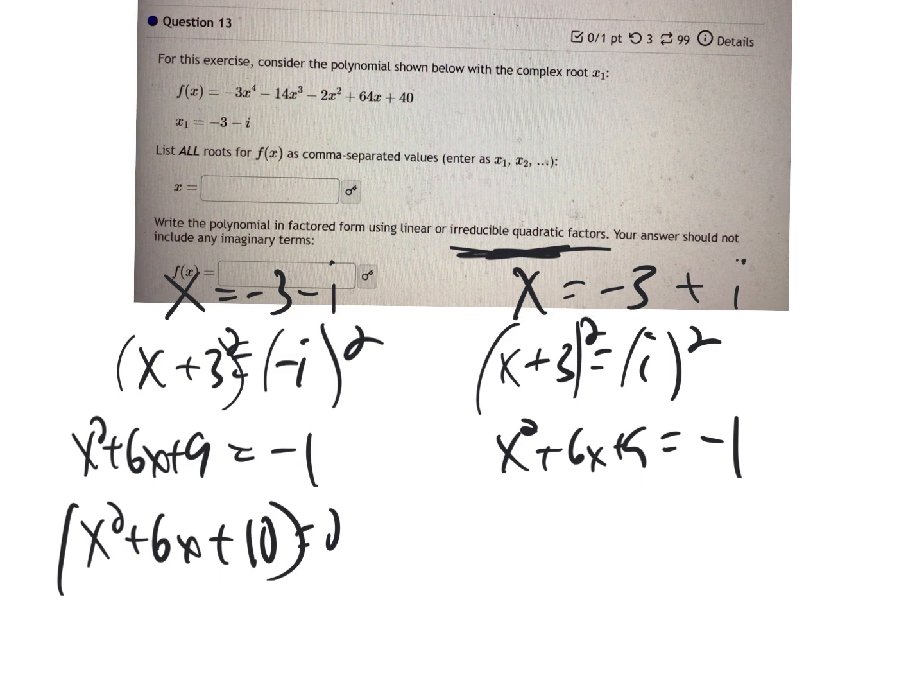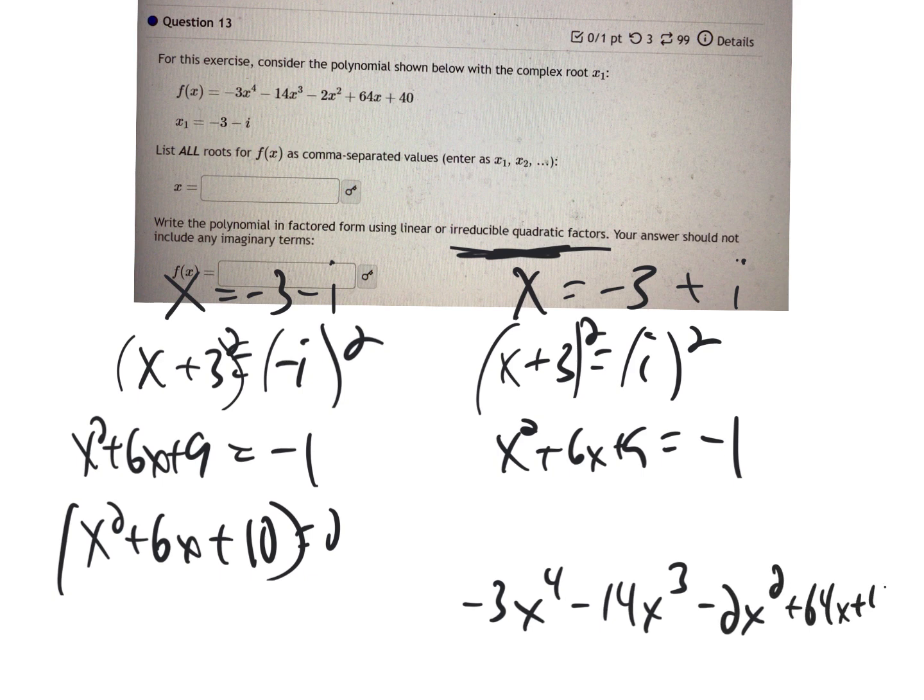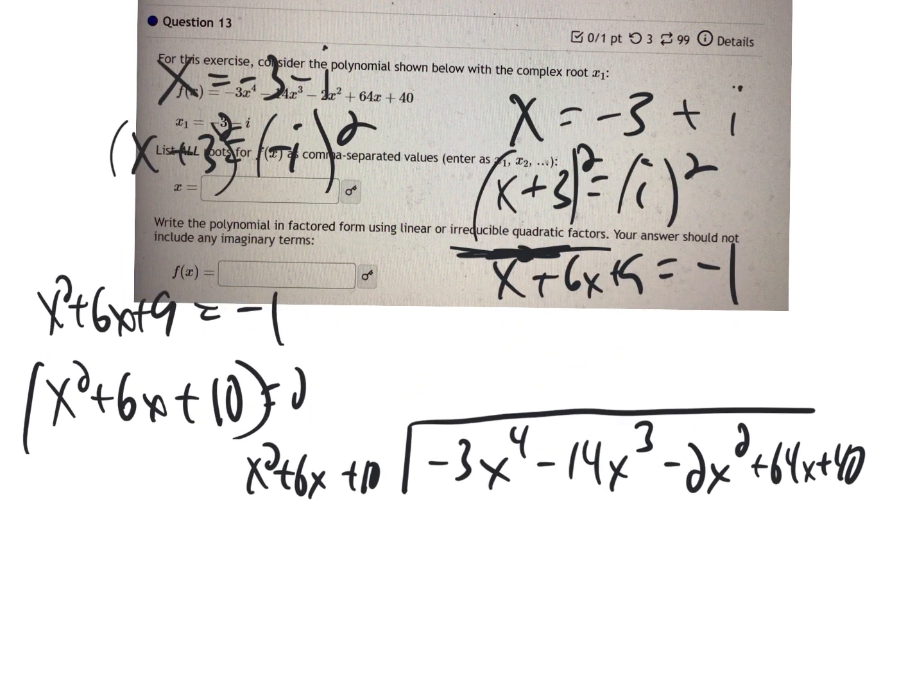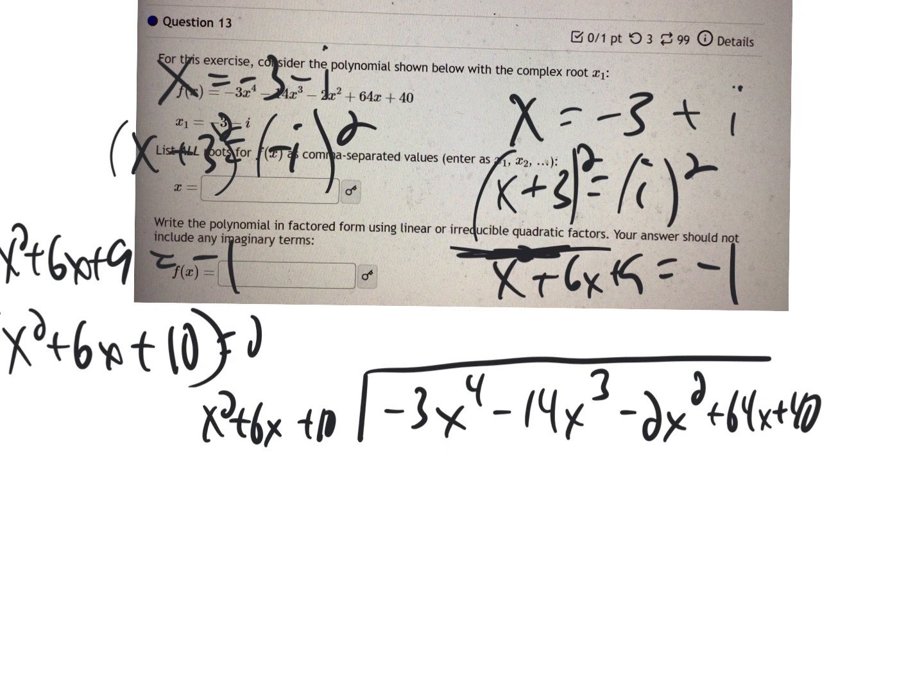So I'm going to have negative 3x to the fourth minus 14x to the third minus 2x squared plus 64x plus 40. And I'm going to divide this by x squared plus 6x plus 10. Now, I don't know if you want to, I should stop this video or you know how to do the long division. I'll just play it through and you can always speed it up if you don't need to see this.